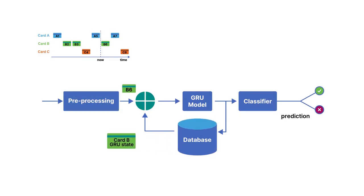Then, we join these inputs with the previous GRU state of card B, which was lastly changed in transaction 3. Finally, we provide all this information to our classifier to make a prediction.